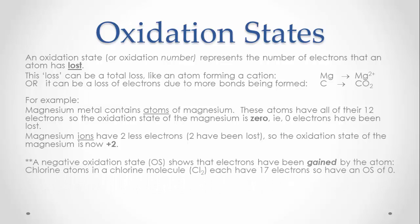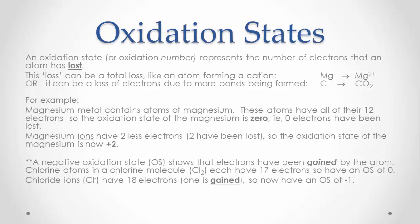There can be a negative oxidation state, which shows that electrons have been gained by the atom. A good example is chlorine. A chlorine atom in a chlorine molecule has all of its 17 electrons, so the oxidation state will be zero. A chloride ion has 18 electrons — a full valence shell — as it has gained one electron when the ion was formed, so the chlorine now has an oxidation state of negative one, showing that it has gained one electron.